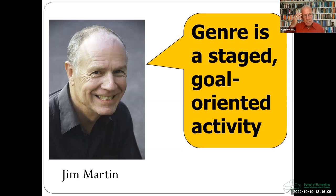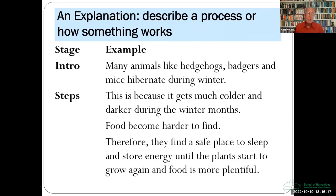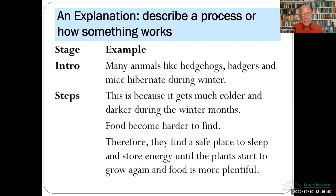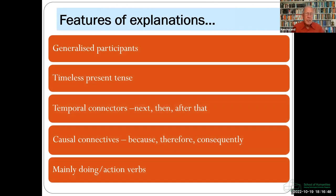Let me give you a couple of examples from classrooms. First, the explanation genre: an explanation describes a process like the water cycle or how something works, like a light bulb. This example from a primary school L1 student is about hibernation. It's structured as a general statement introducing the topic, then a series of logical steps explaining how or why it occurs. They're usually written with generalized non-human participants in the timeless present, a lot of temporal sequence connectors — next, then, after that — causal connectives — because, therefore — and a lot of action verbs.